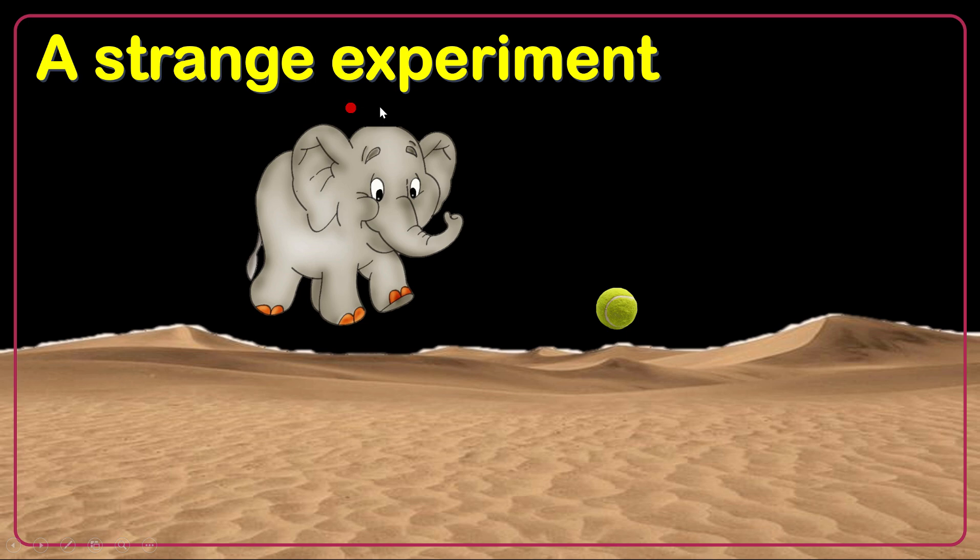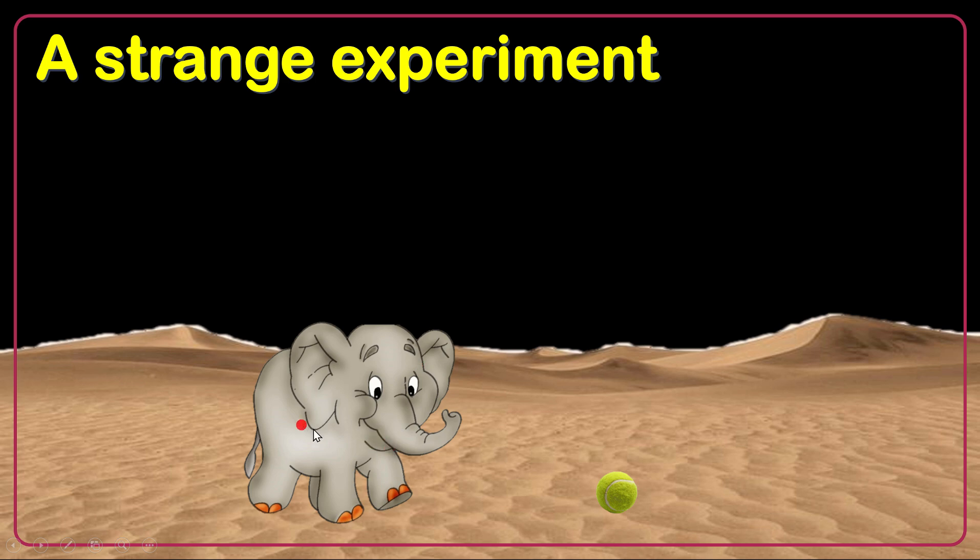I just start the lesson with a strange experiment. I hold an elephant and a tennis ball at a certain height and then I release both objects at the same time. Unbelievably, both objects will fall down with the same acceleration and same speed.